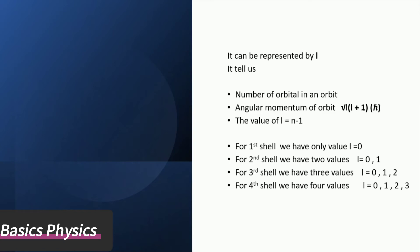For the fourth shell we have four values l equals 0, 1, 2, 3, which has s orbital, p orbital, d orbital, and f orbital.